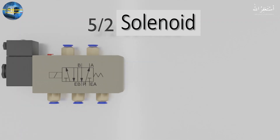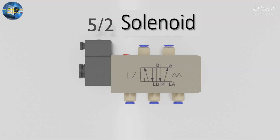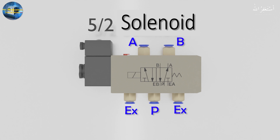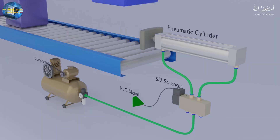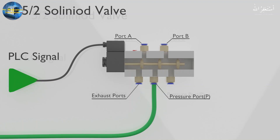The most commonly used solenoid valve is the 5/2 way solenoid valve. Today we will discuss in detail how the 5/2 way valve works and try to clear all doubts regarding it. The 5/2 way valve has 5 ports and 2 positions — that's why we call it a 5/2 way valve. We will explain all these concepts gradually in this video tutorial.